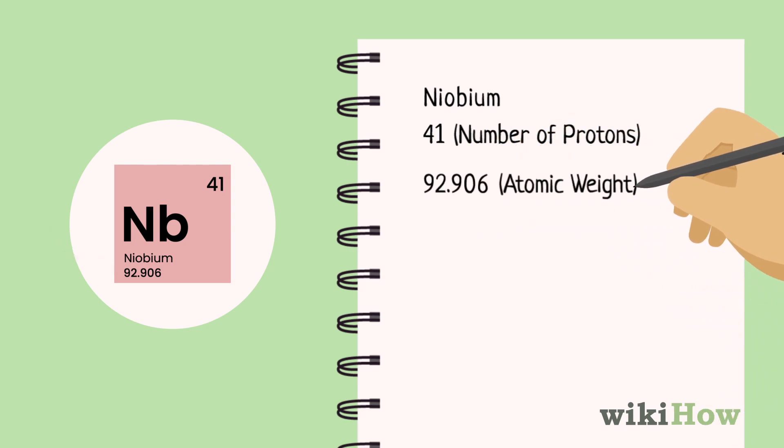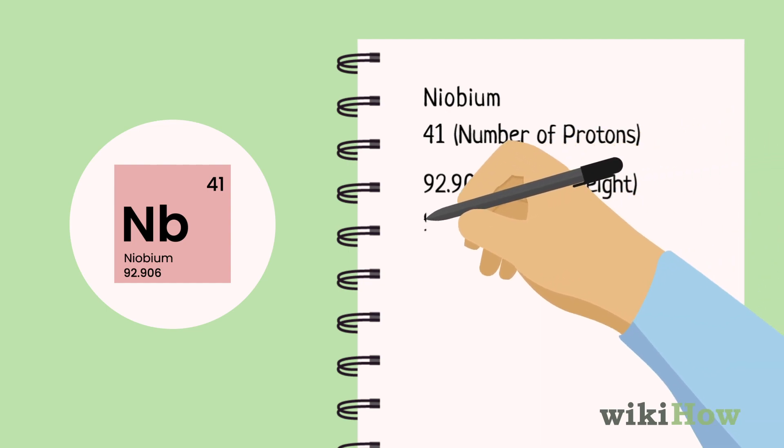Round up the atomic weight to the nearest whole number. However, niobium has an atomic weight of 92.906, so you would round it up to 93.